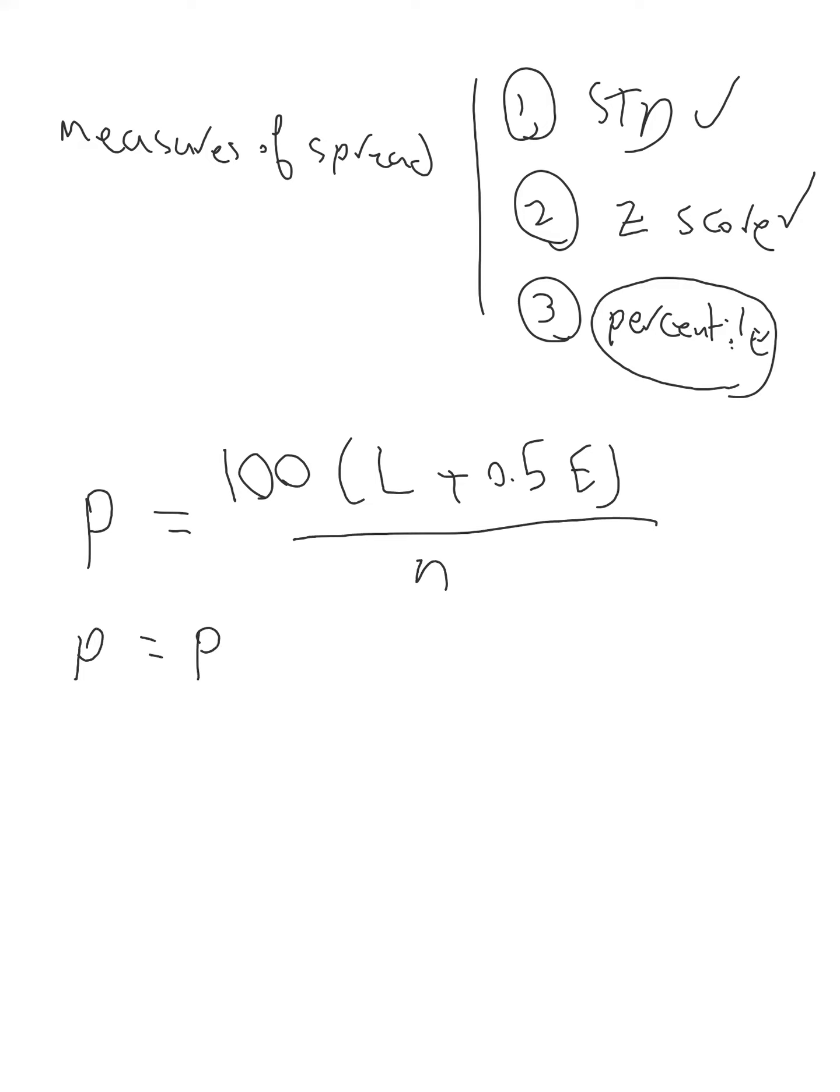L is the number of data less than the data point, or any data point of interest,